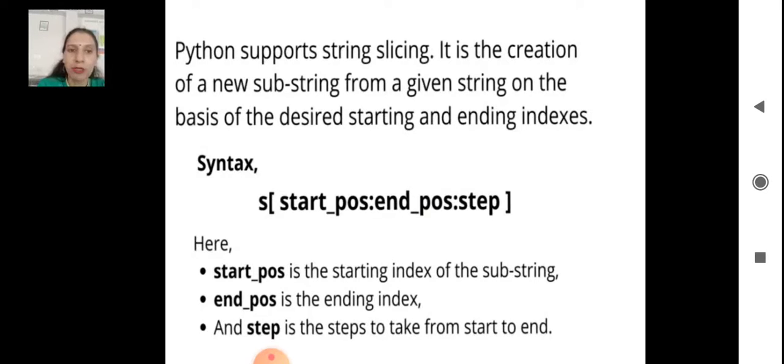Here start_pos is the starting index of the substring, end_pos is the ending index, and step is the steps to take from start to end. The start position and the step position are optional. You can slice by only giving the end position or the stop value also.